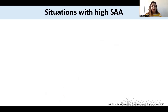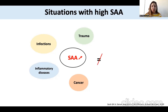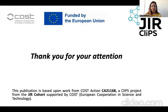Now, let's summarize the situations in which we can observe a higher rate of SAA. In fact, SAA may be elevated in infections, in trauma, in cancer, and in inflammatory diseases. But I highlight here the fact that if the patient has a high level of SAA, this does not implicate that the patient has amyloidosis. Thank you very much for your attention.